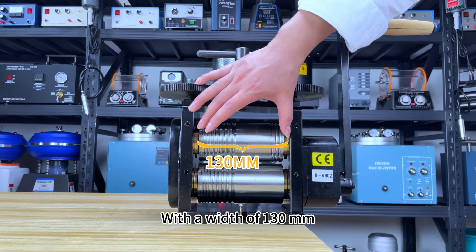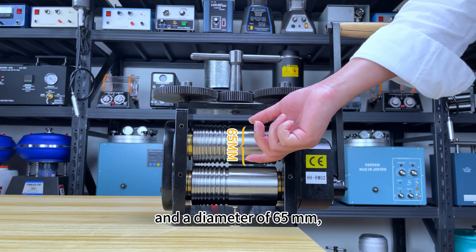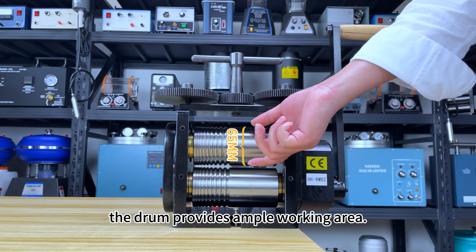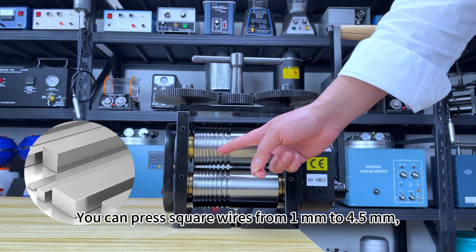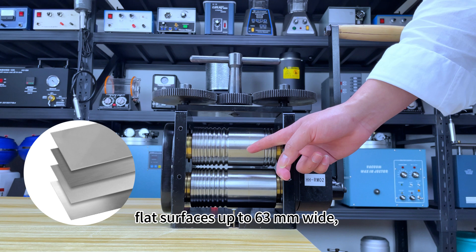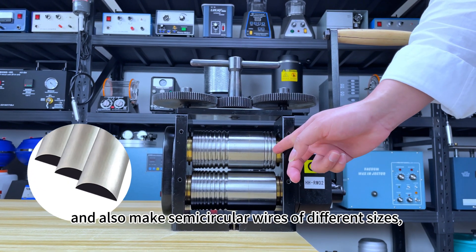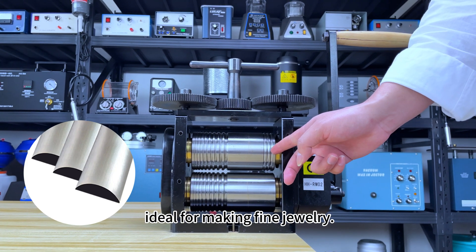With a width of 130mm and a diameter of 65mm, the drum provides ample working area. You can press square wires from 1mm to 4.5mm, flat surfaces up to 63mm wide, and also make semicircular wires of different sizes, ideal for making fine jewelry.